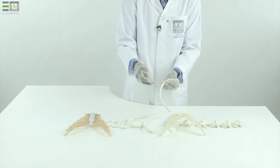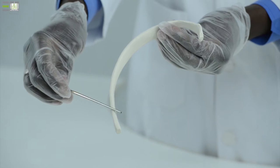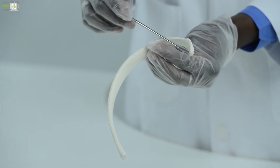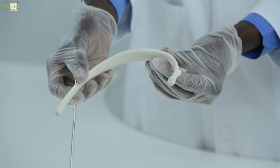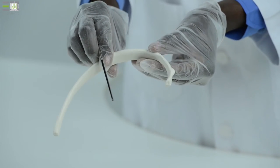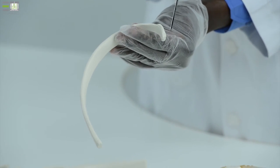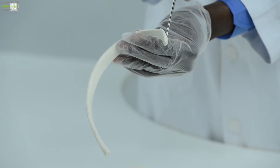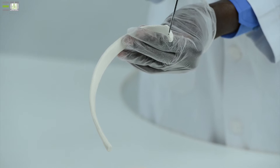The ribs are classified according to their shape into the following types. Typical rib, which consists of the following parts. The parts near the vertebral column, articulates with the side of the body of the vertebrae, is called head.